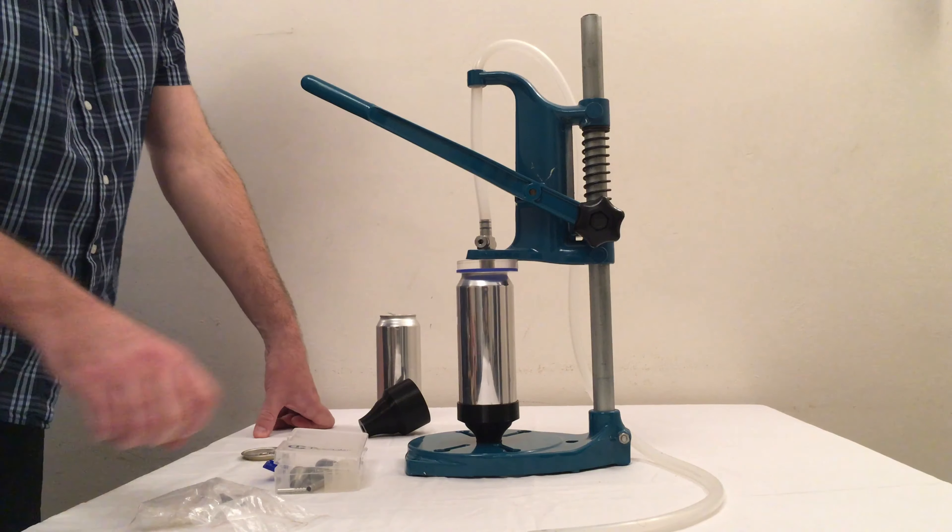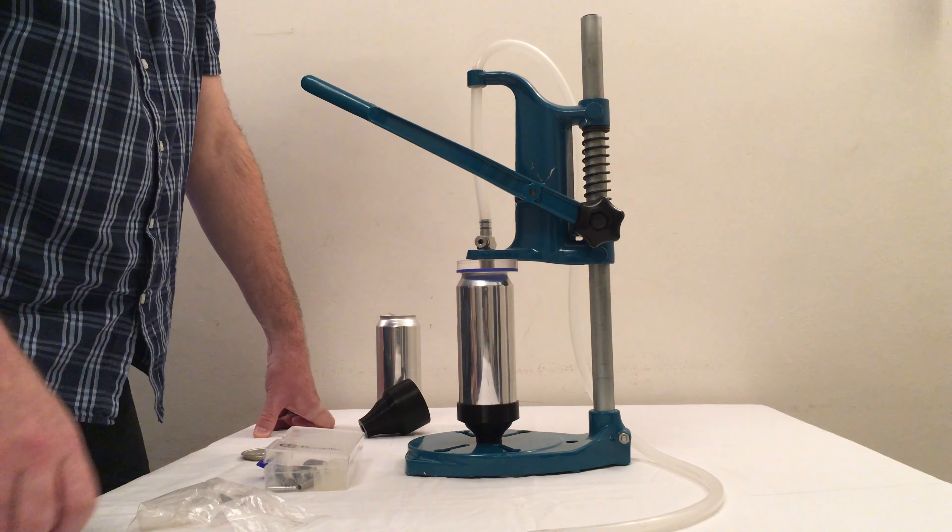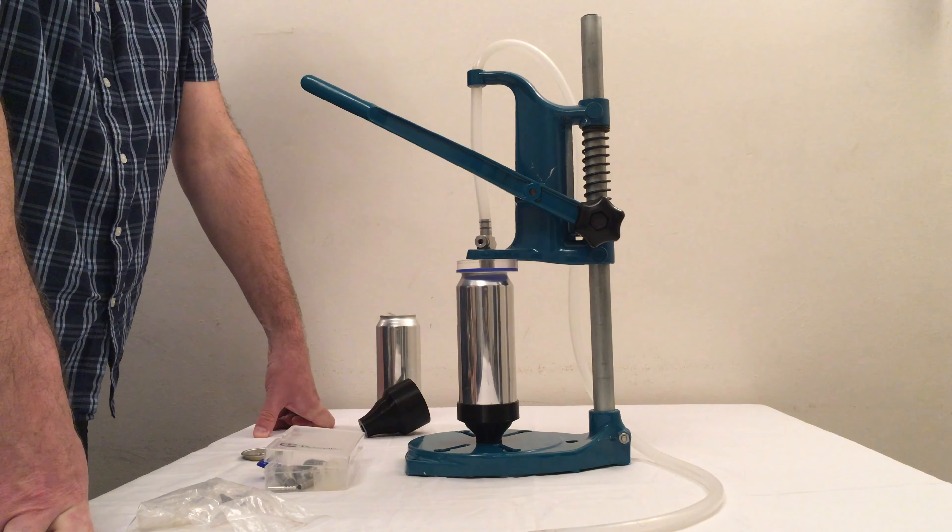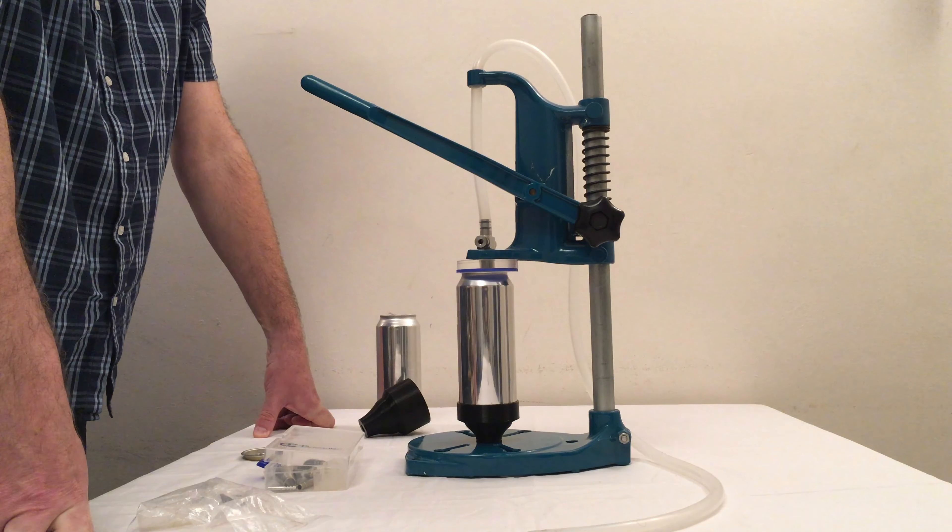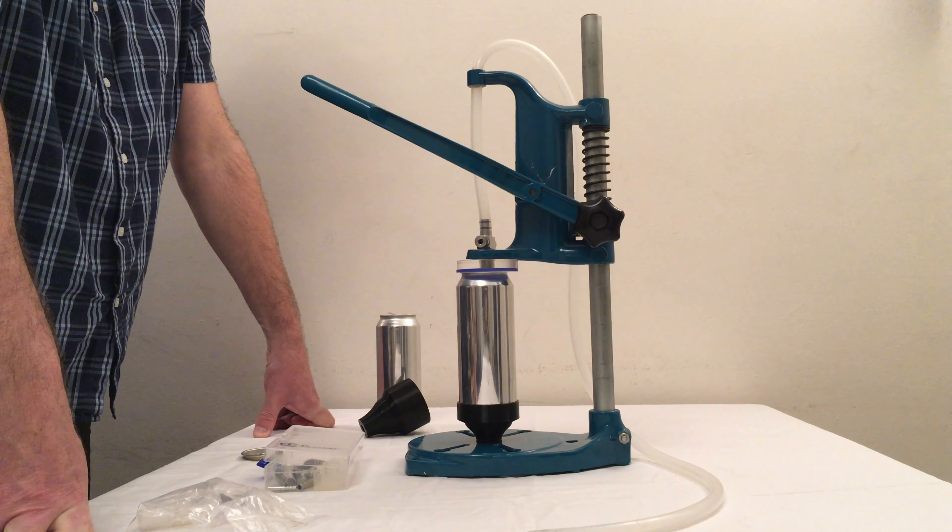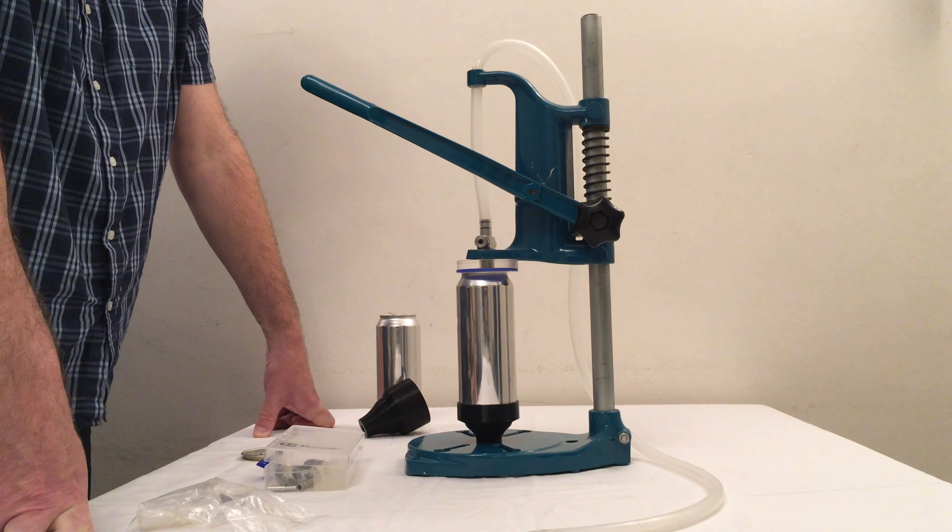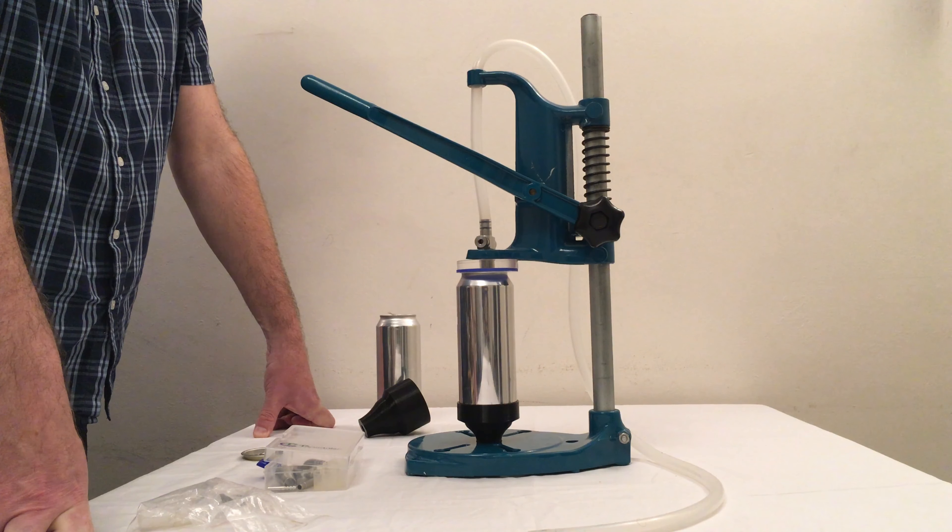Tap cooler do make a can counter pressure filler. Unfortunately, they wouldn't sell me one direct. They told me to go to my local homebrew store, which they said would supply them, but my local homebrew store still hasn't got them in stock. So I thought I'll make my own.